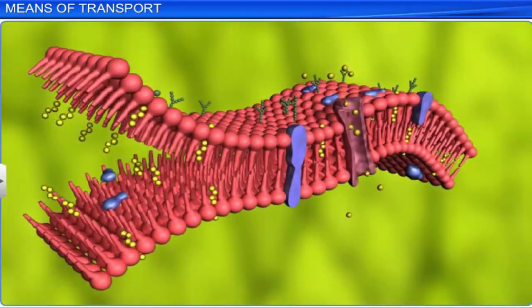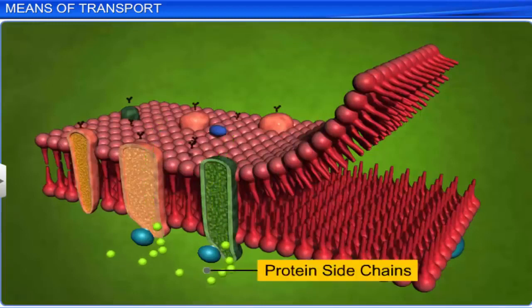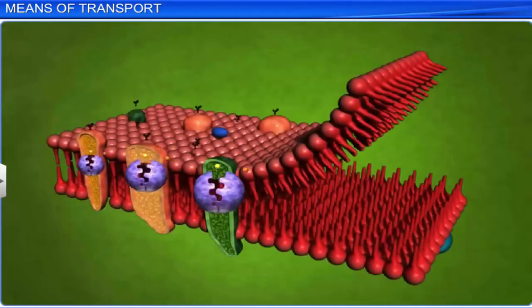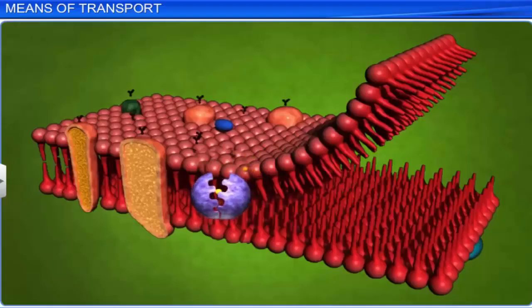Facilitated diffusion has an advantage in that it allows cells to select substances for diffusion. It is however sensitive to inhibitor molecules that react with side chains of the transport proteins. Proteins are responsible for creating channels in the membrane which allows molecules to pass through them. Some of these channels are large enough to allow a variety of molecules to cross over, and some are always open while others are controlled.